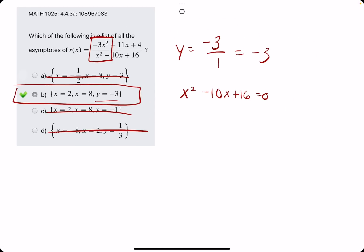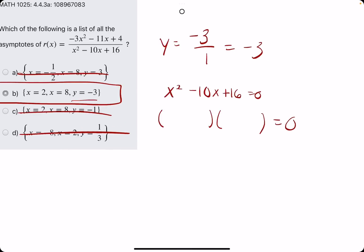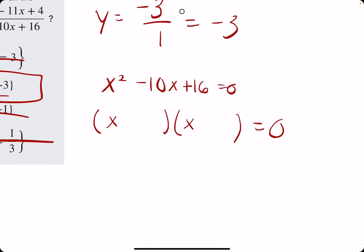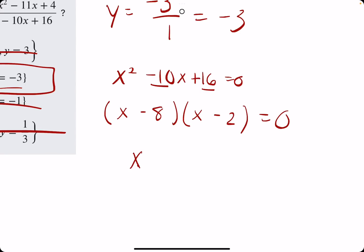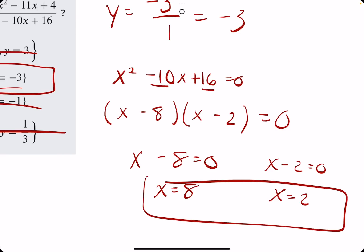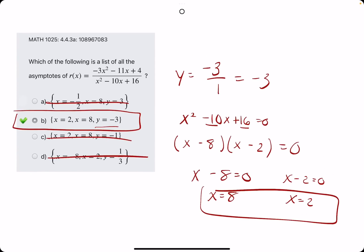So, we set the denominator equal to 0. And in this case, there's no slide method required. We just want two numbers multiplying to 16 but adding to negative 10. So, negative 8, negative 2. Setting both of these equal to 0, we find that x equals 8 and x equals 2. These are the vertical asymptotes.